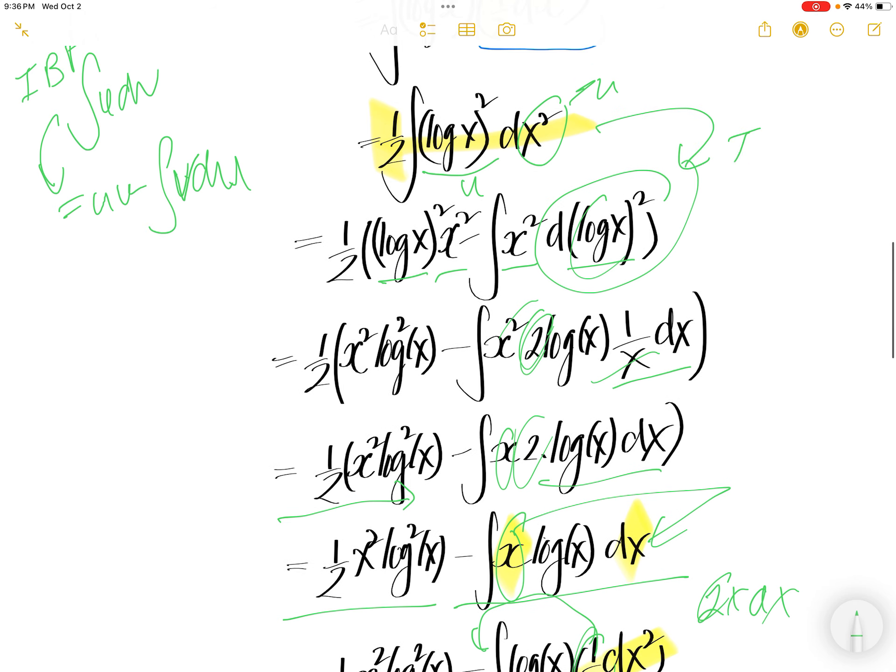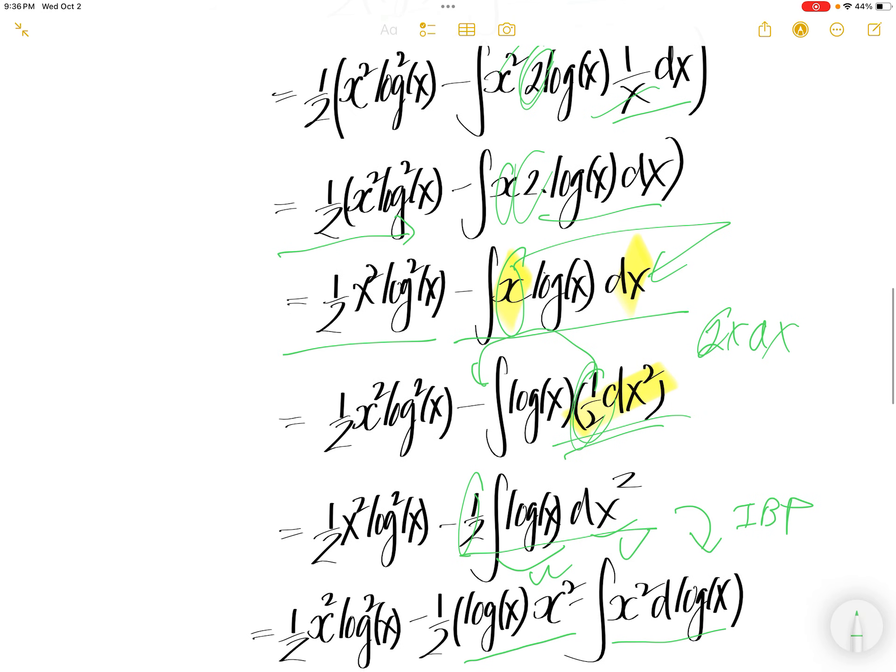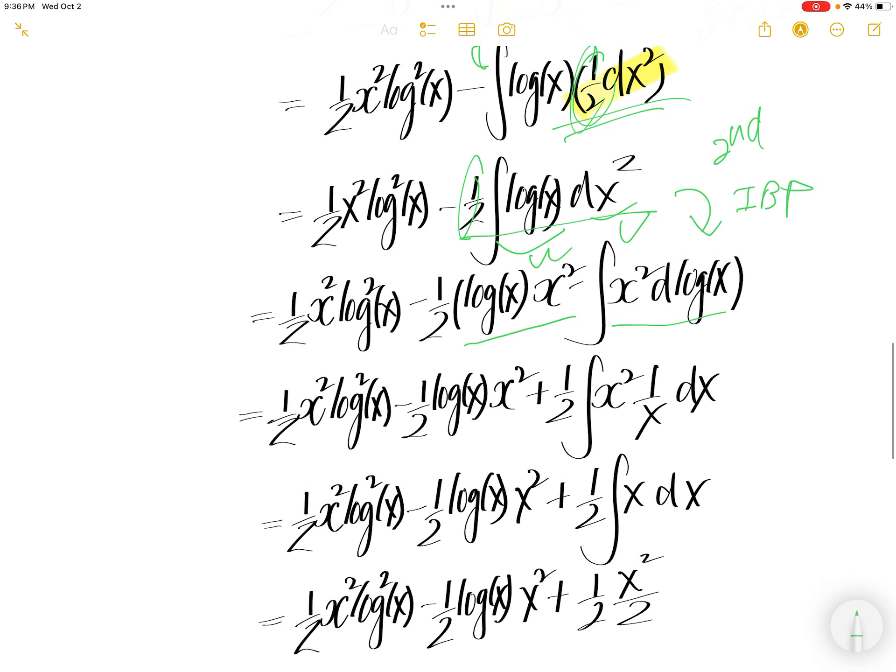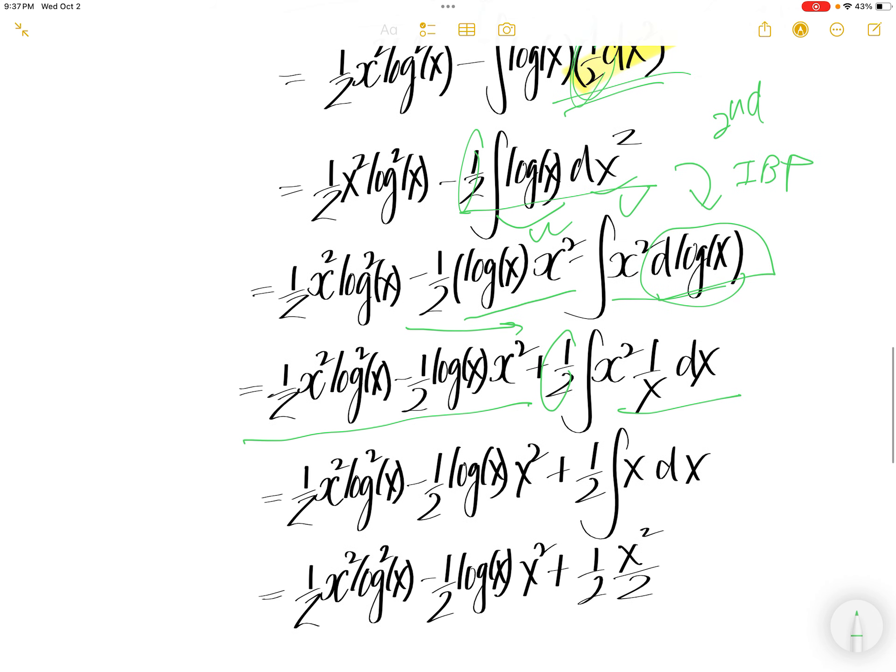Here is 1 IBP, the first IBP, and then here is the second IBP. Now, everything is the same. Distribute that in, minus half times minus 1 is the positive half. And then, derivative of this is 1 over x dx. x cancel, you get integral of x dx.